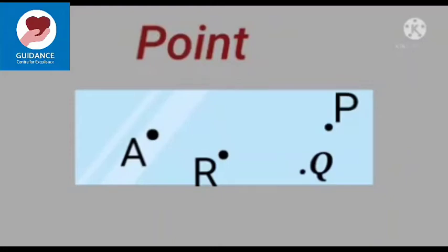If we put a pencil on a paper, the mark we get is called a point. For example, point A, point B, point Q, etc. Here, A, P, Q are three different points.